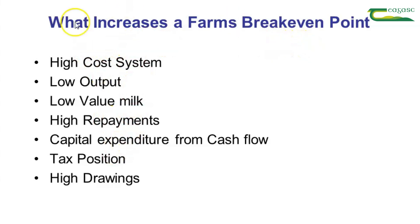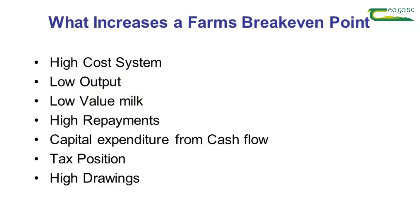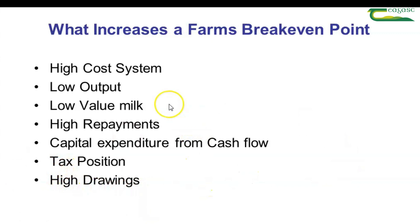So what increases the farm's break-even point? High cost systems will obviously increase your cash payments out of the farm and increase your break-even point. Low output will reduce the income and therefore reduce surplus cash and increase the farm break-even point. Low milk value will increase it because you will have a lower value for your milk, which will require a higher base price to pay all costs. High repayments, capital expenses taken from cash flow, a high tax position, and high drawings — for example, children going to college or mortgages — will all also increase the farm break-even.